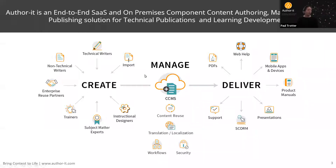Before we get started, I'd like to remind people of the scope of AuthorIt and give you a better idea of what it can do. AuthorIt brings together an end-to-end content management system that allows you to create all of your content in a single place — by bringing in existing content, having subject matter experts contribute via a simple web interface, or using the full authoring system for technical writers. You can reuse content, translate it, manage security and workflows, and deliver it to a variety of outputs including PDFs, web help, product manuals, SCORM learning, micro-learning, and presentations.